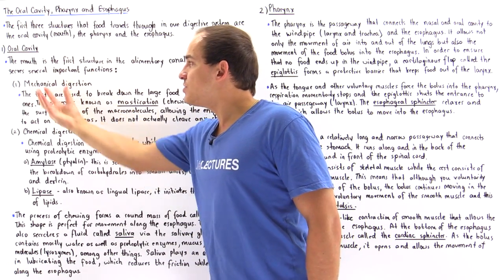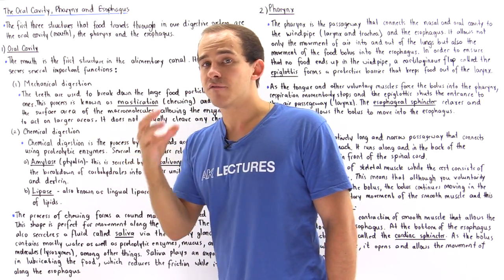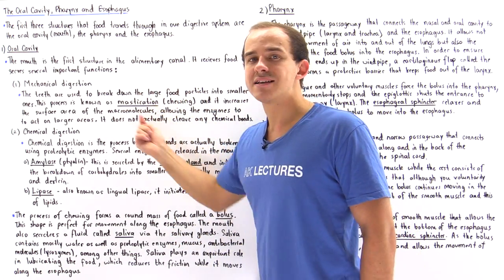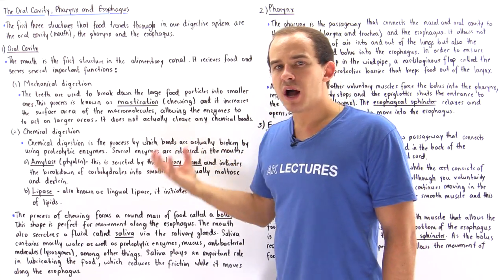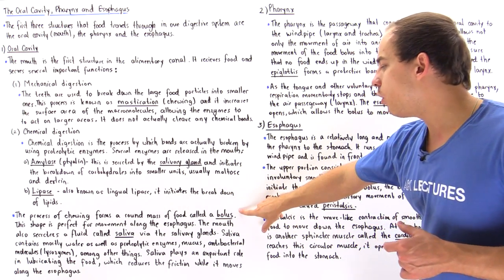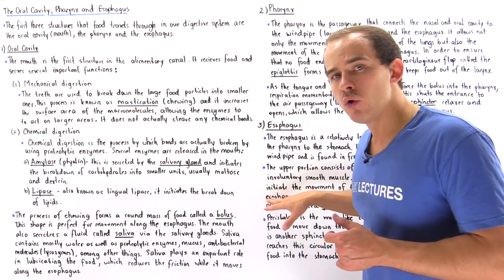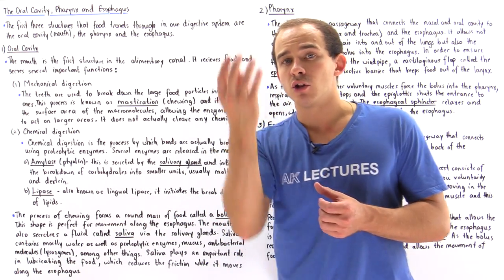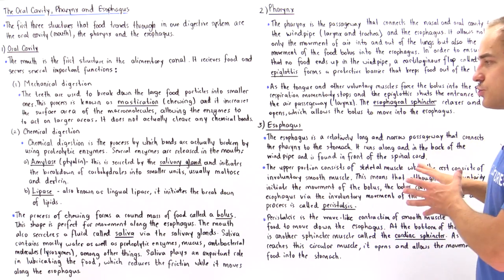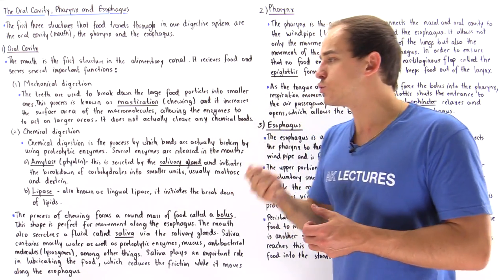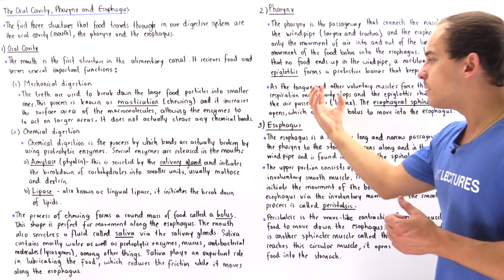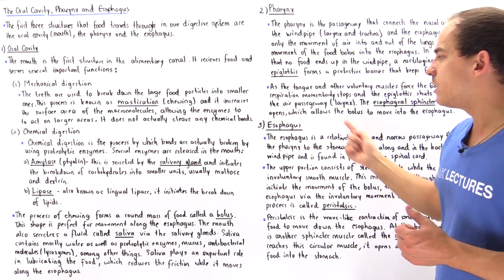What initiates mechanical digestion is the movement of the muscles and teeth found inside our mouth, known as chewing or mastication. This chewing process transforms our food into a spherical mass called the bolus. This shape allows the bolus to move along our cylindrical esophagus, since the sphere of food can easily travel through that tube.